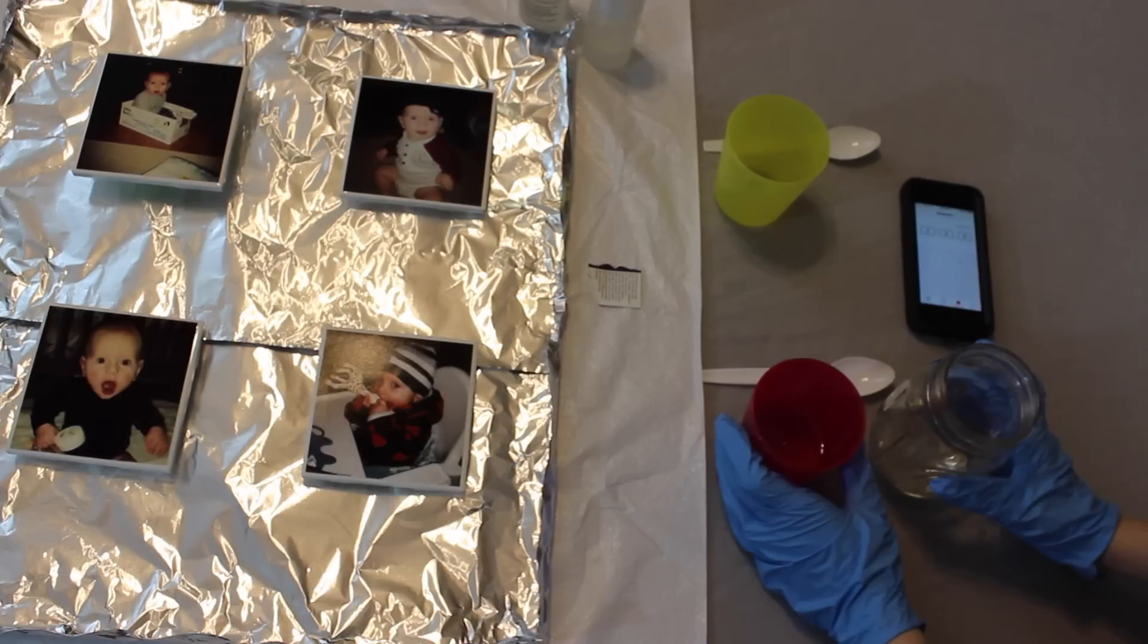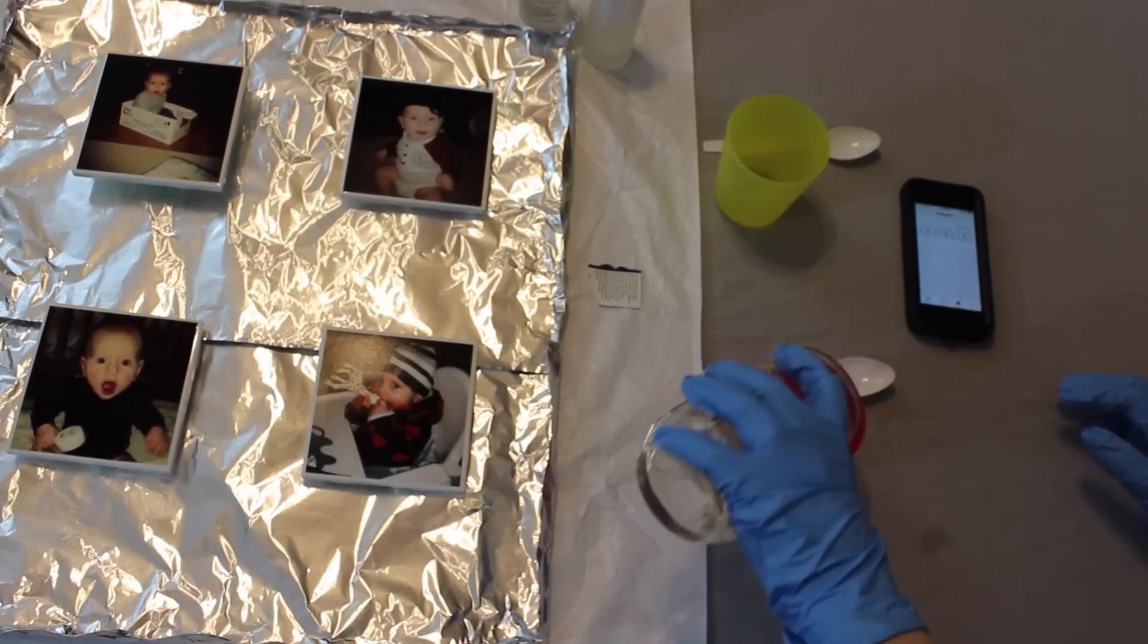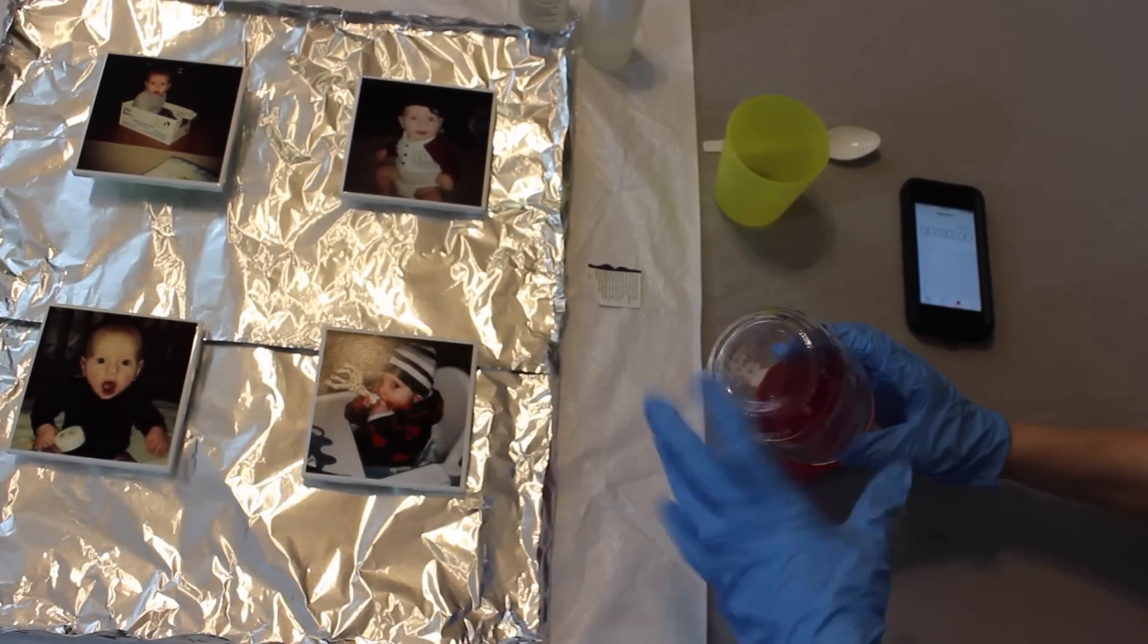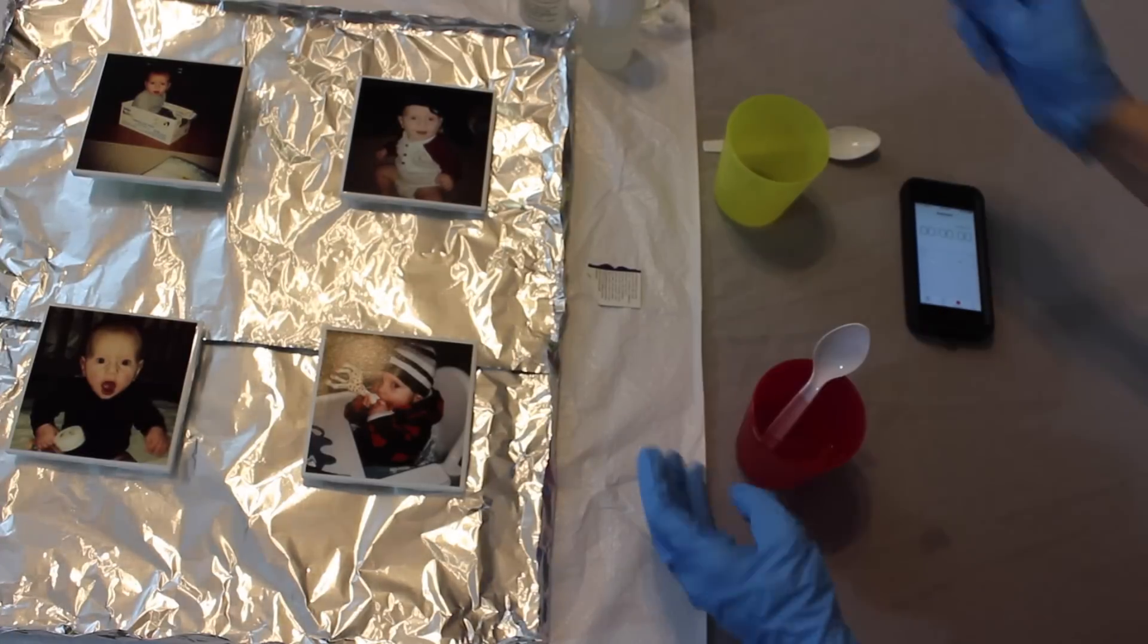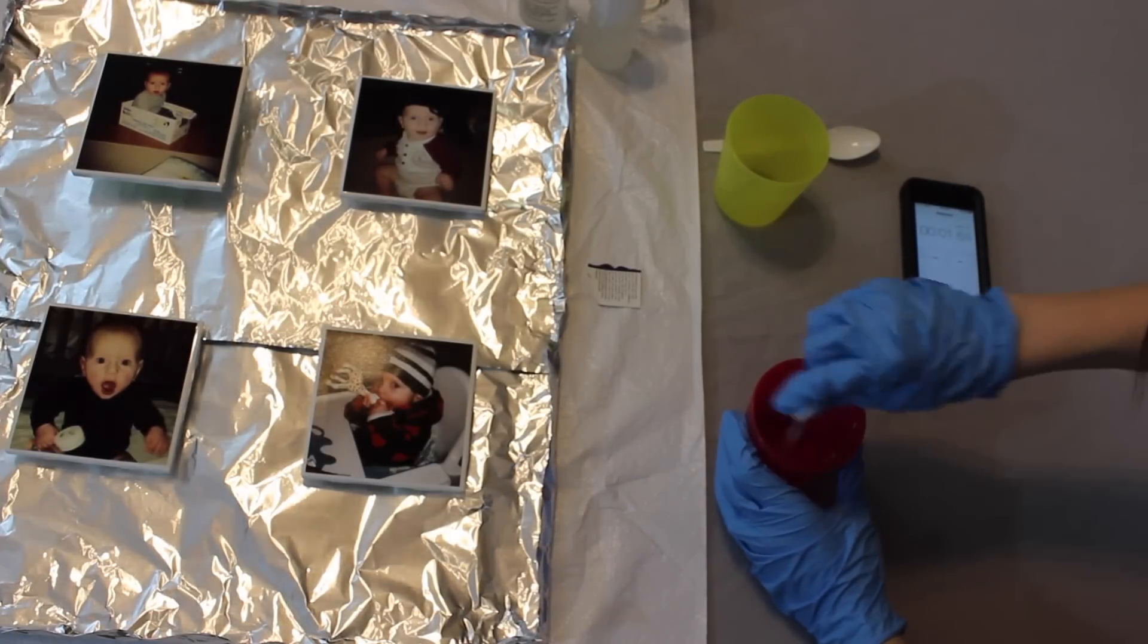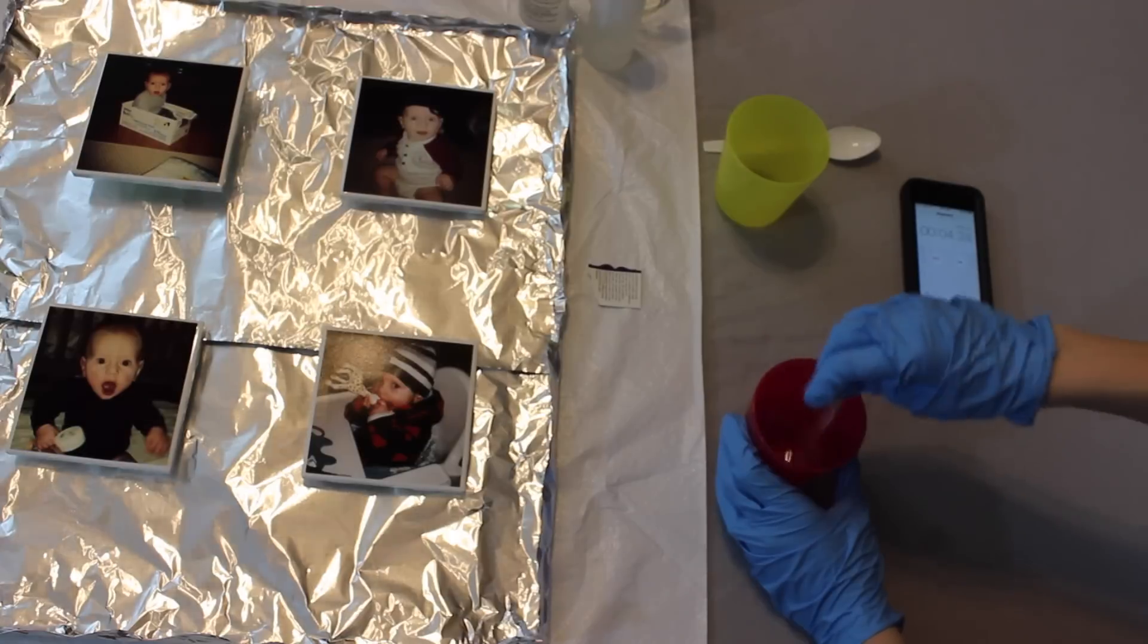You're going to mix your hardener in with your other bottle and stir very, very well. Make sure you set your timer to 2 minutes because you have to stir for exactly 2 minutes.